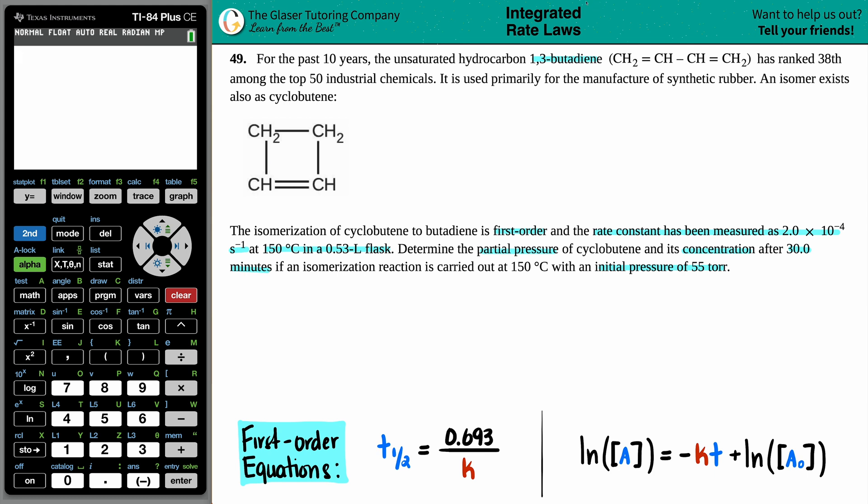Now they already gave us the rate constant, right? The rate constant is a k value. And they told us that the k was 2.0 times 10 to the negative fourth, and that's per second, seconds to the minus one. They tell us we have a temperature and a volume. Cool. Now they want us to find out the partial pressure and the concentration after a generalized time, right? They told us that they wanted it in 30 minutes. So 30 minutes. If the initial pressure, so initial pressure, initial amount. And they told us that the initial amount was 55 torr. Beautiful.